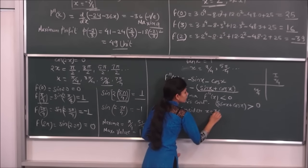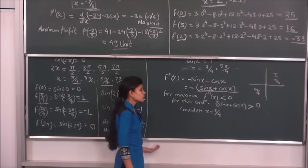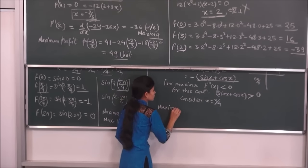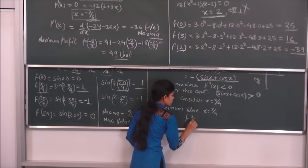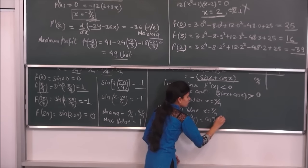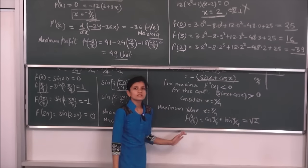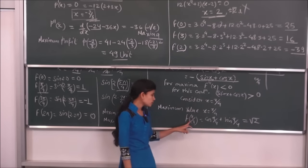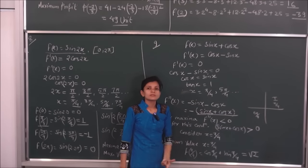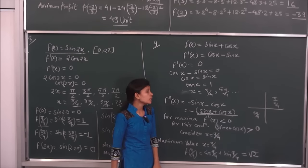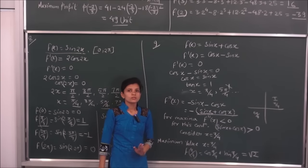इसलिए x = π/4 पर function maximum होगा। f(π/4) = sin(π/4) + cos(π/4) = 1/√2 + 1/√2 = √2। इस function की maximum value है √2 और यह point है π/4। इस question में mainly यह ध्यान रखना है कि जो दो critical points मिलते हैं उनमें से वो angle consider करना है जिन पर f''(x) < 0 की condition satisfy हो।